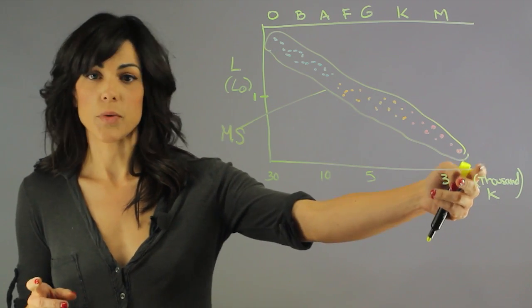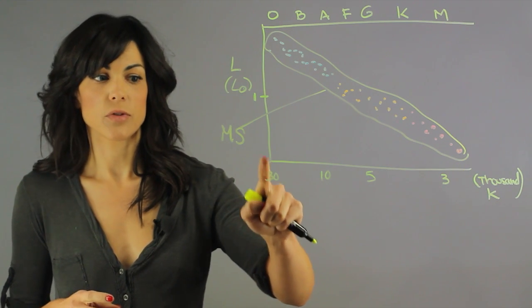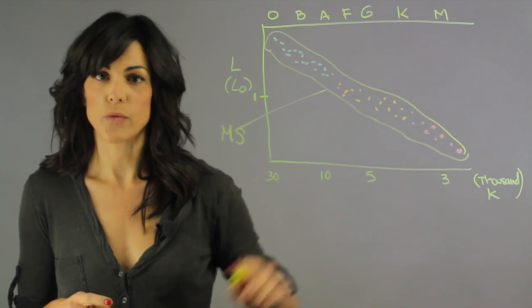And then in the same axis we can also put it in terms of temperature and this is thousands of Kelvin. So this is 30,000 Kelvin, 10,000 Kelvin, and so forth.